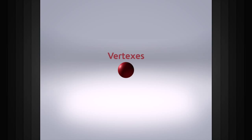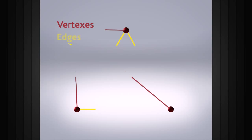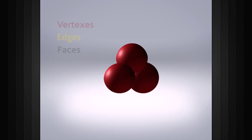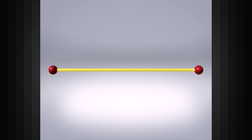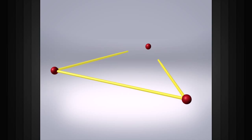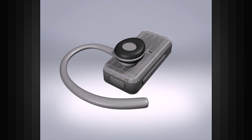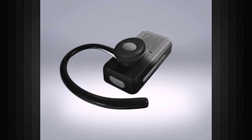Every polygon object is made up of just three components: vertices, edges, and faces. A vertex is just a point in space. When you connect two vertices together you create an edge. When three or more edges are connected you get a face. The face is the visible part of a polygon. You can't see vertices or edges inside of your renderer.